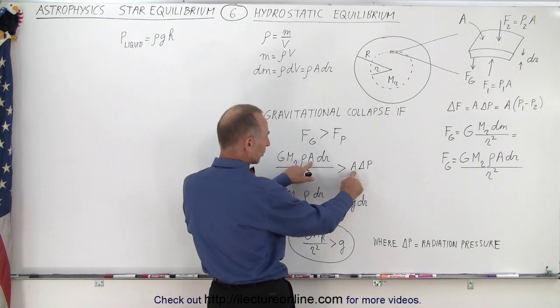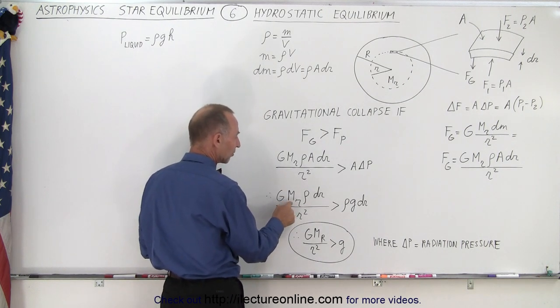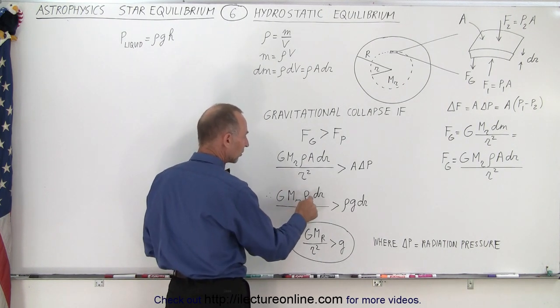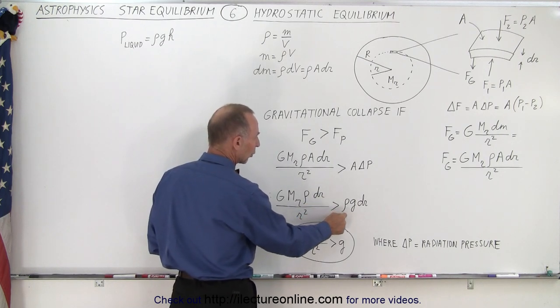What happened to the a? Well, we had an a on both sides. That simply cancels out. And so on the left side, we now have g times the mass within that region of the star times the density times dr divided by r squared must be greater than rho g dr.